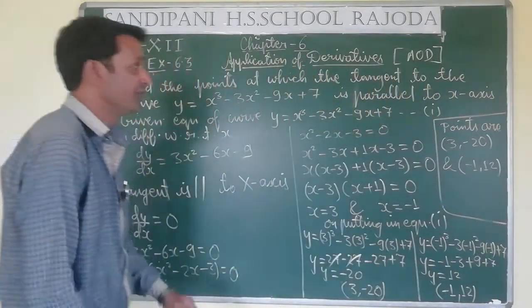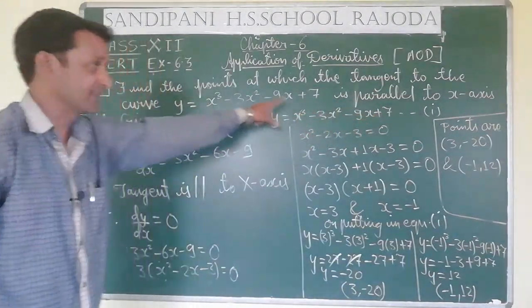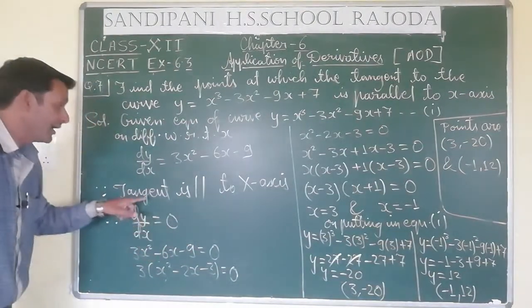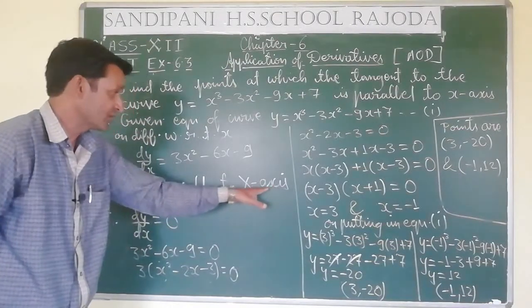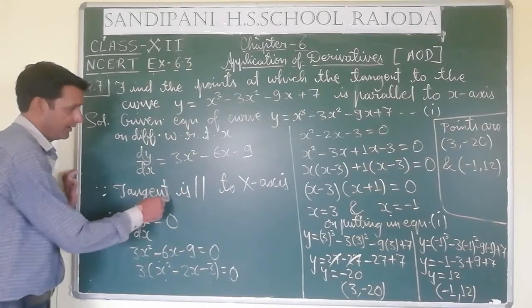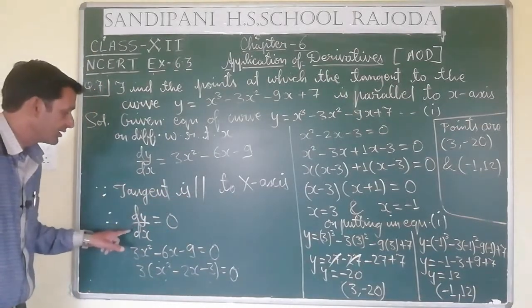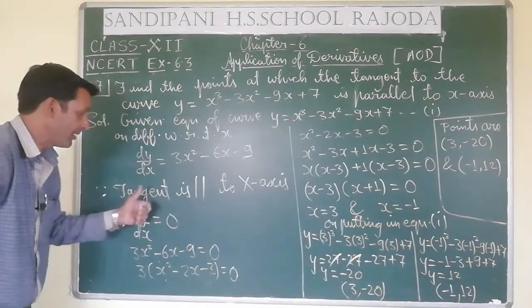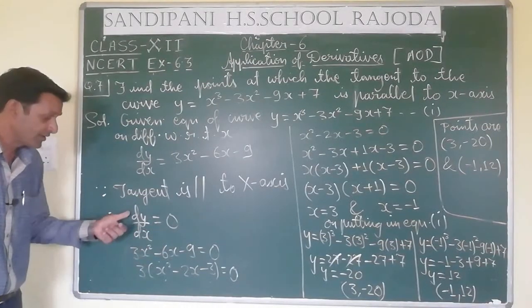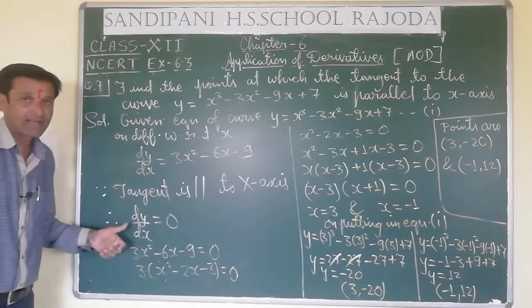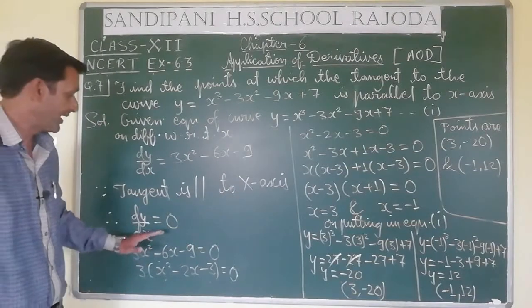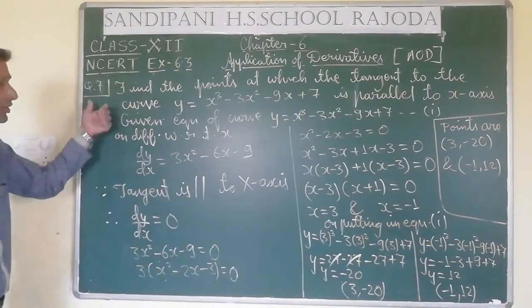When the tangent is parallel to the x-axis, we write dy/dx = 0. But when the tangent is parallel to the y-axis, then the slope of the normal = 0, meaning we set -1/(dy/dx) = 0. Question number 7 is now over.